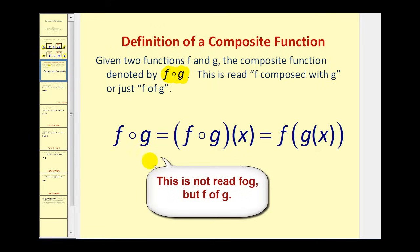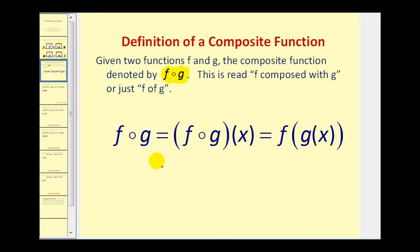Below here we see three equivalent ways to represent a composition of functions. Remember, for a composite function, the order in which we compose the functions is extremely important. Therefore, when we're given a composite function, we're going to rewrite it in this form, because this tells us that we're going to first evaluate function G at the value of X, and the output of that will be the input into function F. Notice the F comes before the G, but when it comes to evaluating, the given value of X will first be the input into G, and that output will become the input into F.